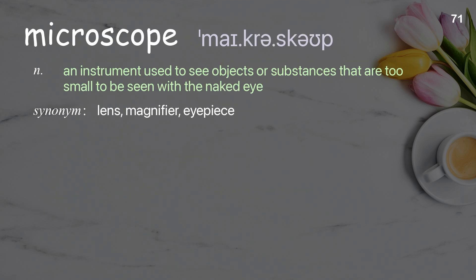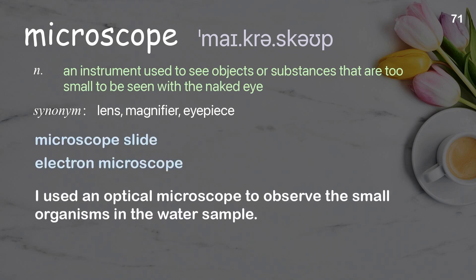Microscope: an instrument used to see objects or substances that are too small to be seen with the naked eye. Examples: microscope slide, electron microscope. I used an optical microscope to observe the small organisms in the water sample.